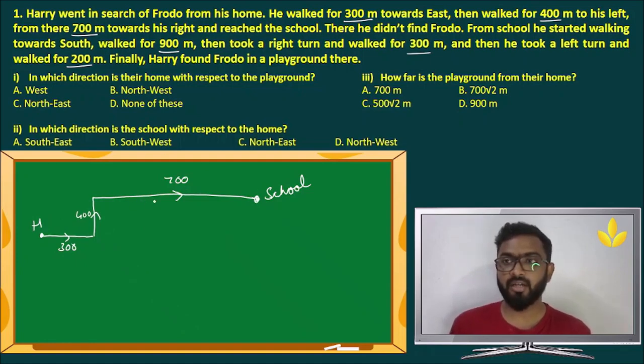He didn't find Frodo. From school, he started walking towards south, walked for 900 meters. We have 900 meters over here. Then took a right turn and walked for 300 meters. He is facing south, so his right is our left, 300 meters. And then he took a left turn and walked for 200, facing this side, left is 200. Finally, Harry found Frodo in the playground over there. So here we have the playground, here we have the home, here we have the school. This is the diagram.